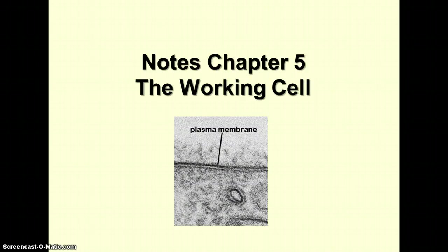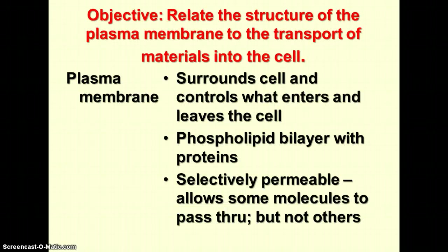These notes are based on Chapter 5, which is entitled The Working Cell. We're talking specifically about the plasma membrane in this first part. Notice here in the micrograph, you can see the phospholipid bilayer that makes up the plasma membrane. The important thing about the membrane is that it controls what enters and leaves the cell. So what we're trying to do is relate the structure of the membrane to how things get into and out of the cell.